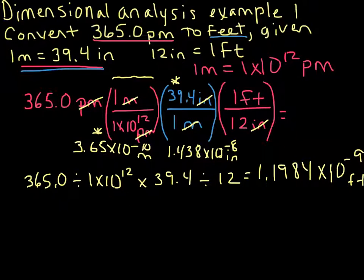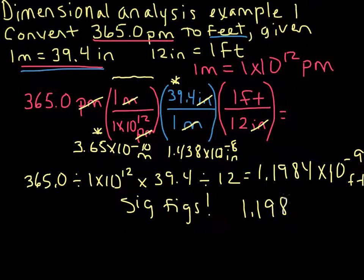Now we have to watch out for sig figs. So how many do we have here? Let's go up and look at our initial quantity, what we started with, and we have 365.0. Remember, because of that decimal point, that 0 is significant. So let's go ahead and count 4 there. So now we're going to have to have 1.198 times 10 to the negative 9 feet. And that's our final answer.